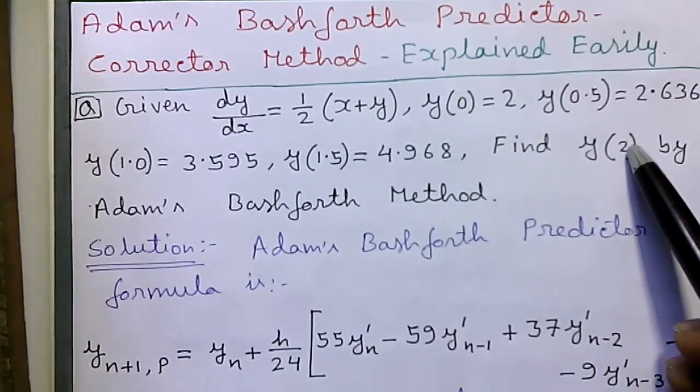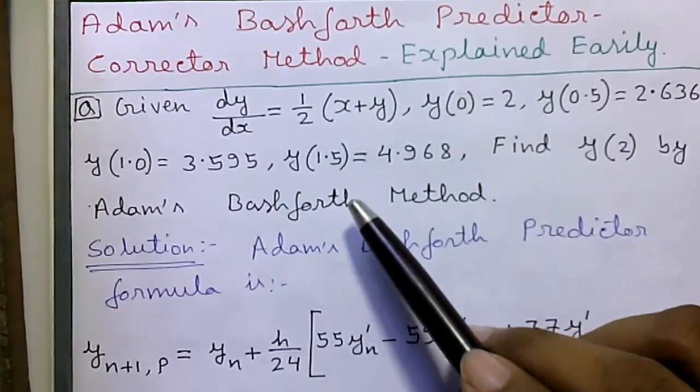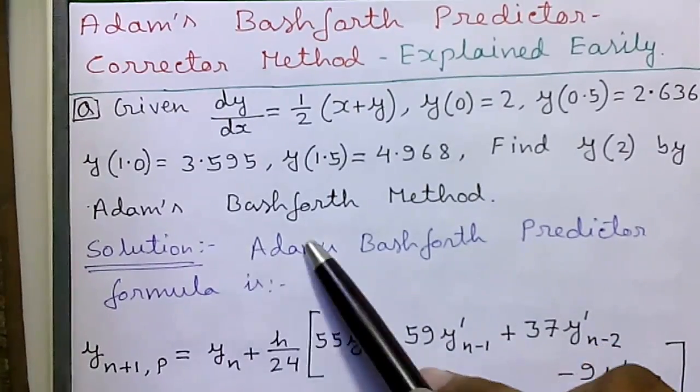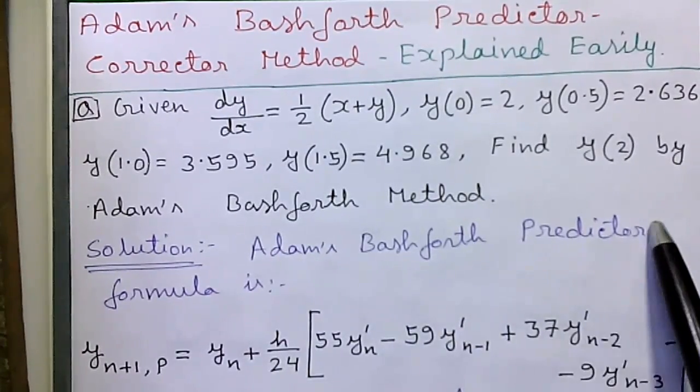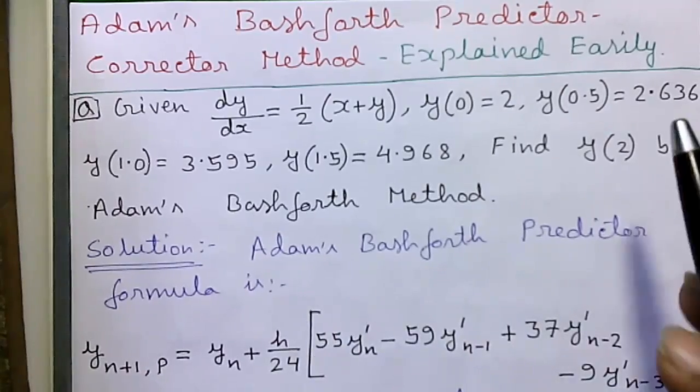We have to find out what is the value for y of 2 by Adams-Bashforth method. So let's proceed to the solution, Adams-Bashforth predictor formula is given below.